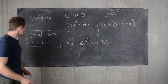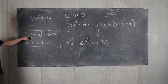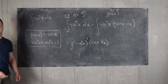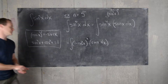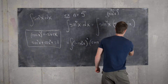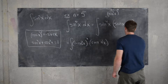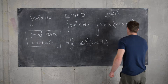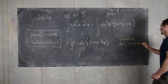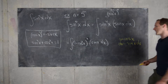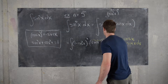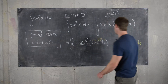Along with the derivative of cosine being negative sine, this gives motivation for a substitution. So let u equal cosine of x, which makes du equal minus sine of x dx. That changes the integral accordingly — sine of x dx becomes minus du.